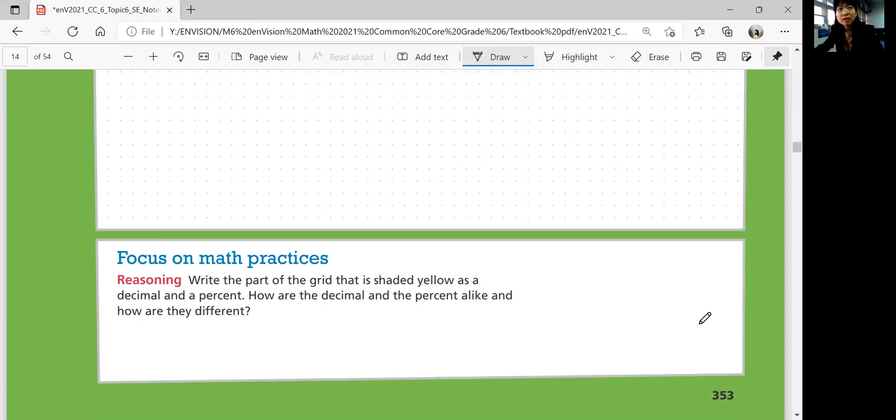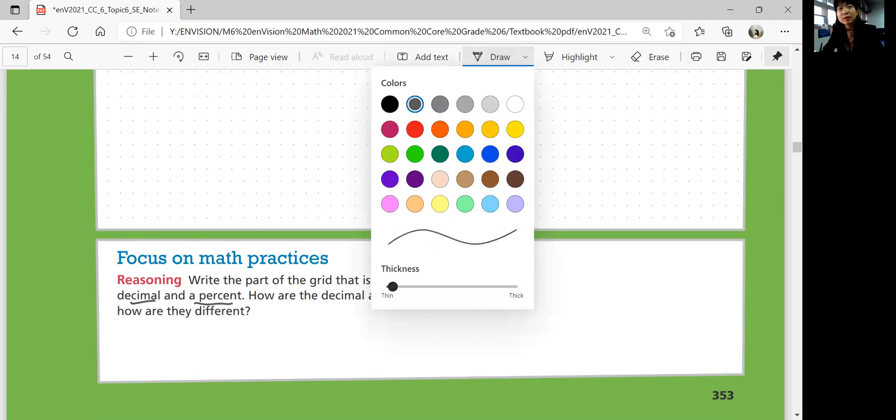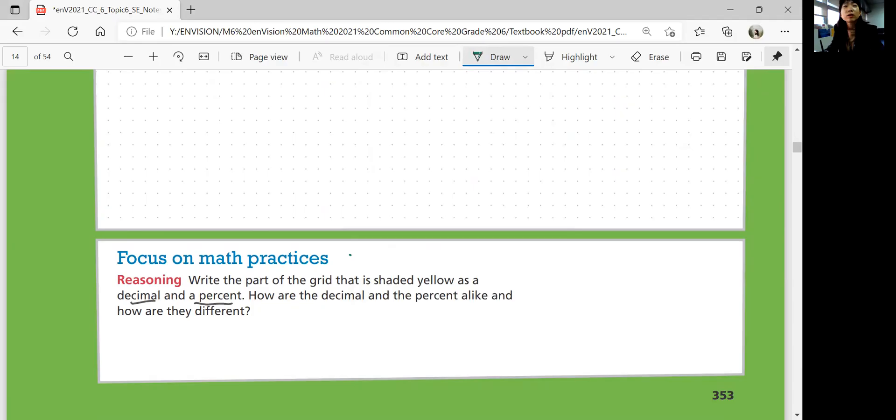Focus on math practices. Write the part of the grid that is shaded yellow as a decimal and a percent. How are the decimal and percent alike? And how are they different? Okay. So yellow. How do you know how many yellow tiles there are? We're going to subtract the parts that we already know, blue and orange, in order to find the yellow tiles. So if you find 100 minus 20 minus 32, that's going to be 48 tiles.